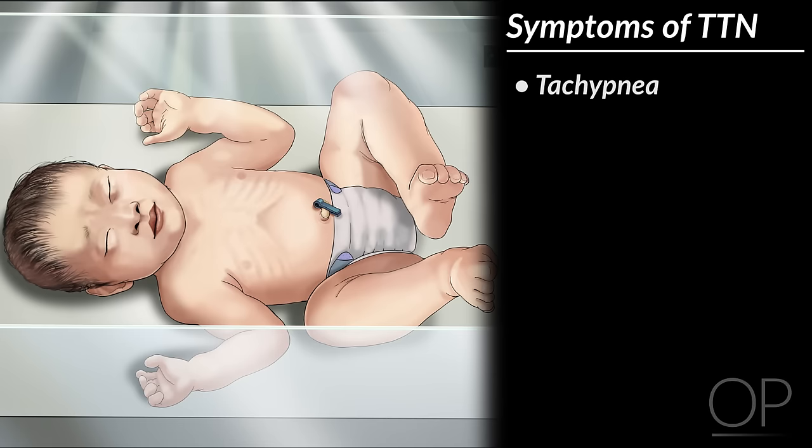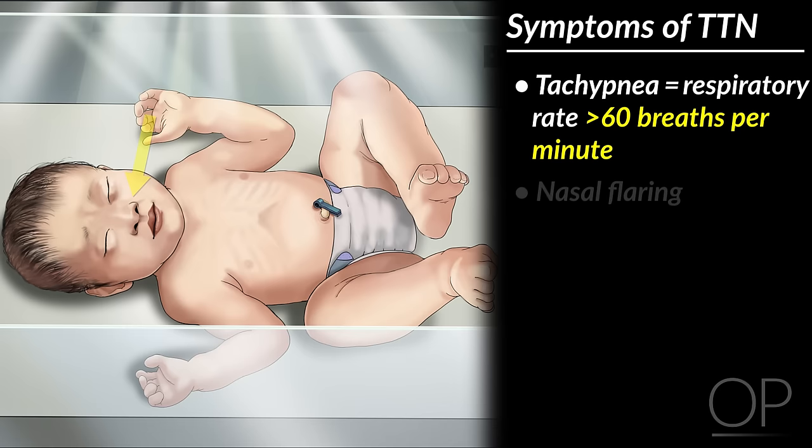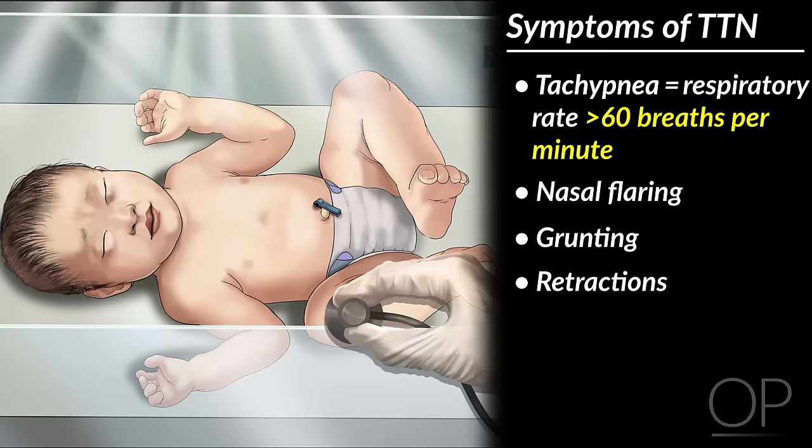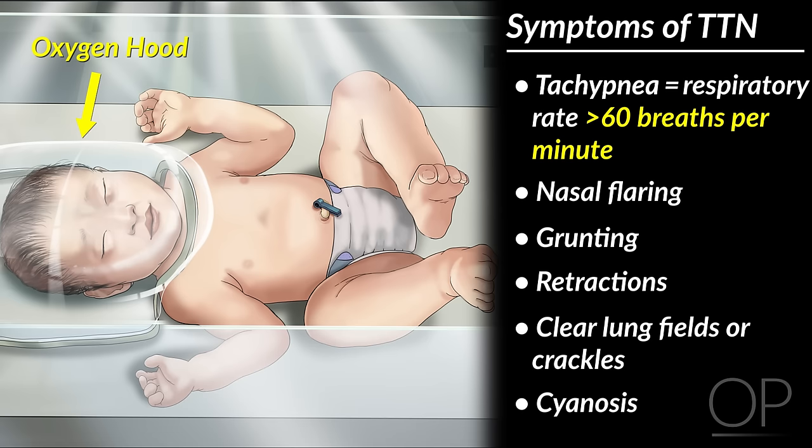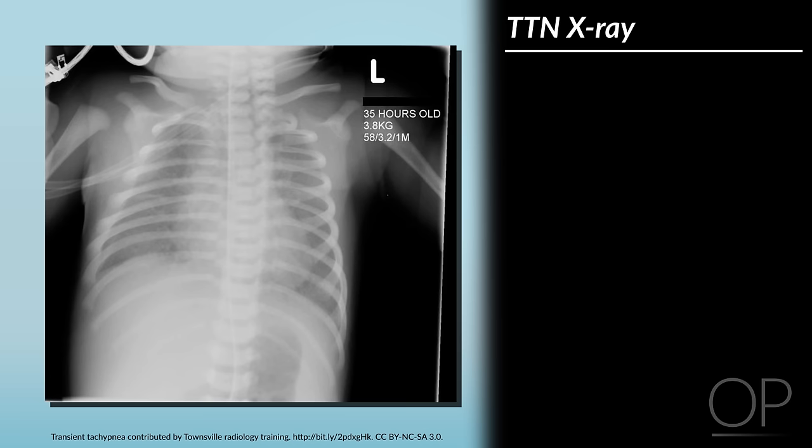Most commonly, these infants present within the first few minutes to hours after birth with tachypnea — which in an infant is a respiratory rate greater than 60 breaths per minute — nasal flaring, grunting, and retractions. On auscultation, lung fields may be clear or crackles may be appreciated. Frequently, these infants have some cyanosis, but very rarely do they need more supplemental oxygen than 40% FiO2.